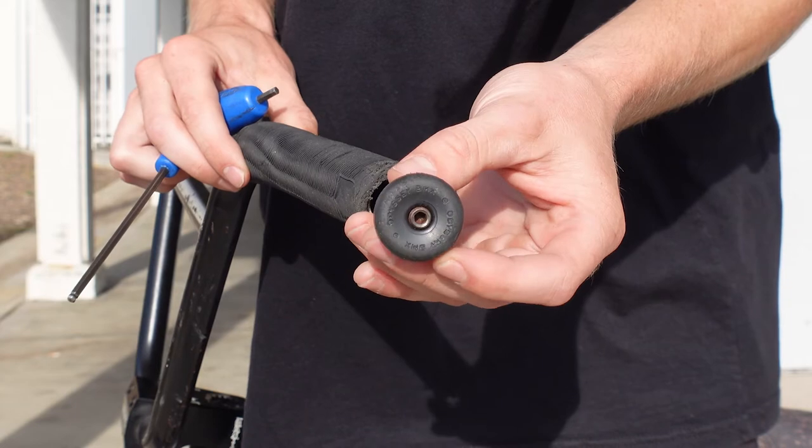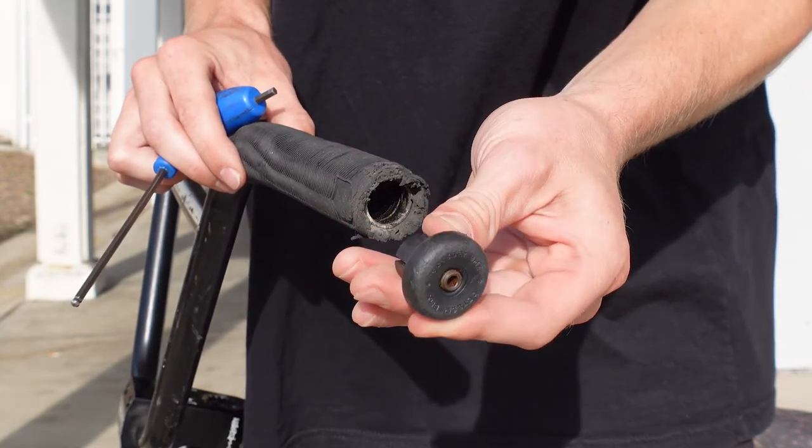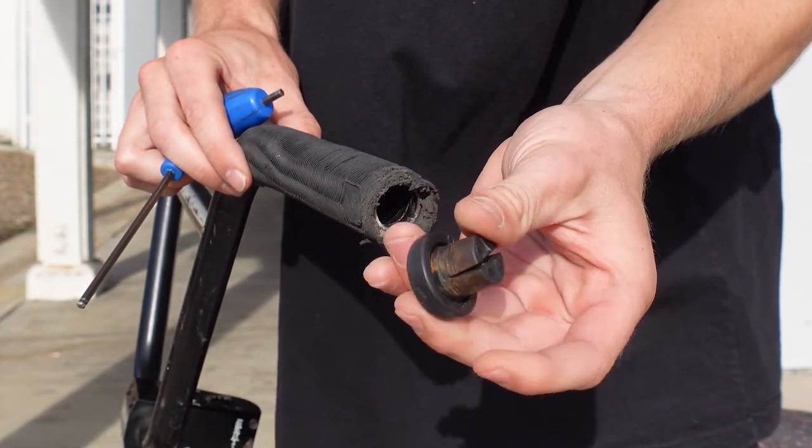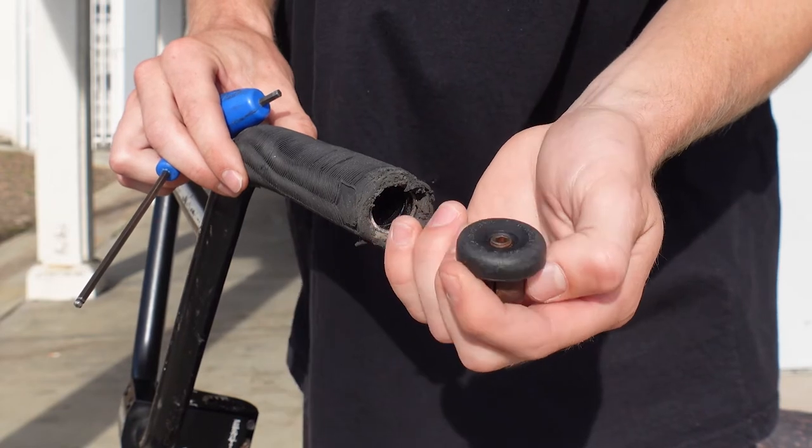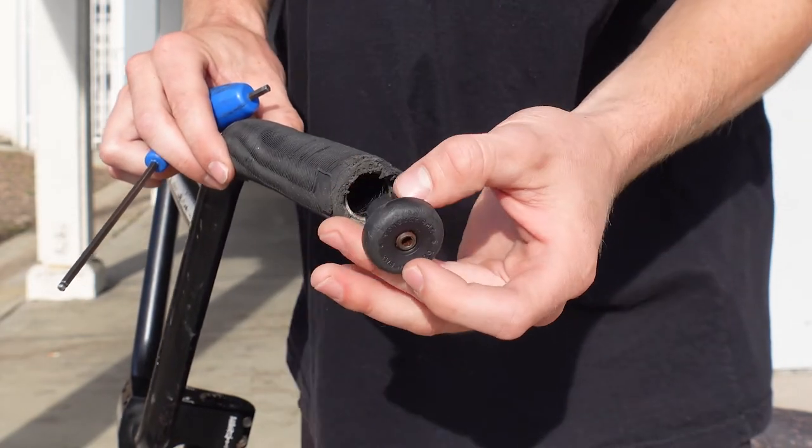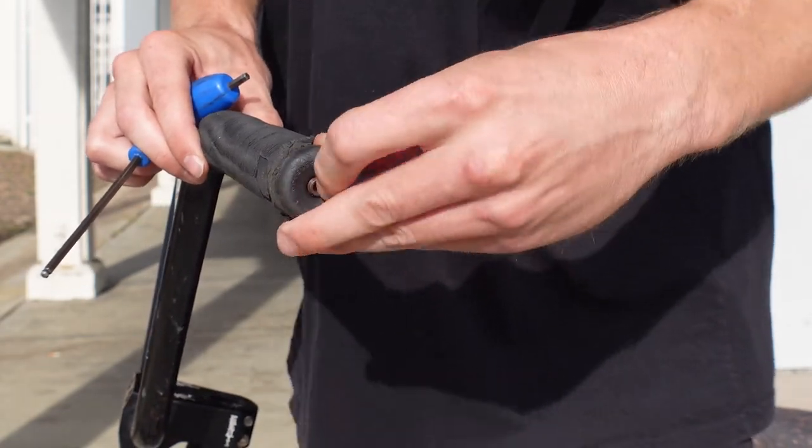And I like these ones because they're a little harder material. Like a plastic. A harder plastic. And fairly simple to put in. You just put it in on the end of your bar end.